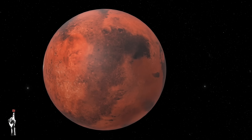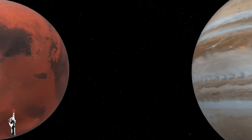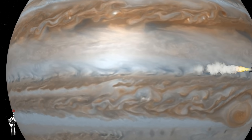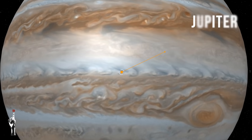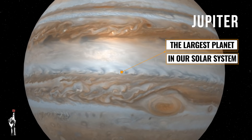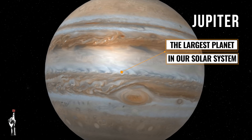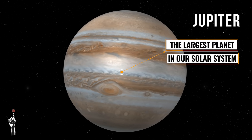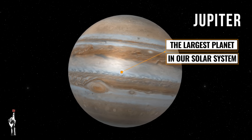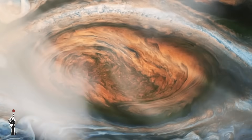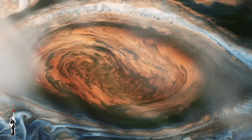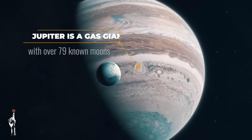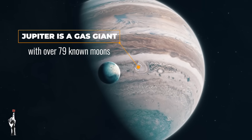Moving away from Mars, our next journey brings us to the fifth planet from the Sun — Jupiter. It is the largest planet in our solar system, known for its colorful swirling clouds and the iconic Great Red Spot, which is a storm larger than Earth that has raged for centuries. Jupiter is a gas giant with over 79 known moons.